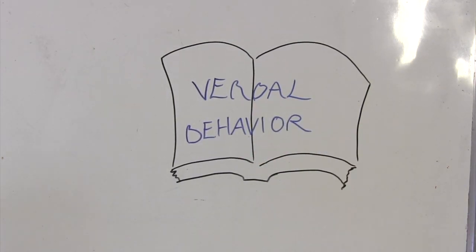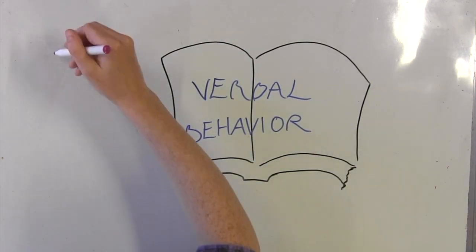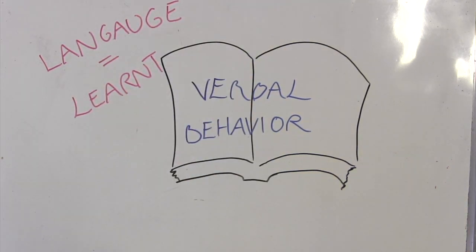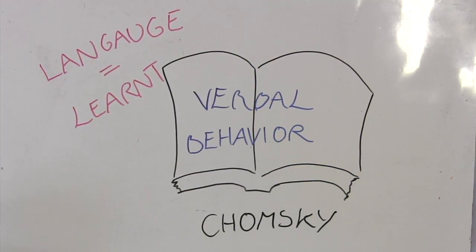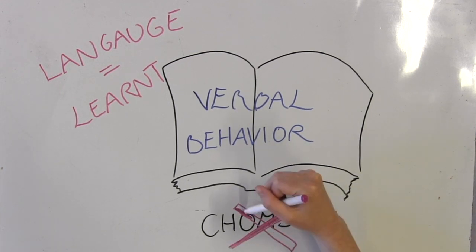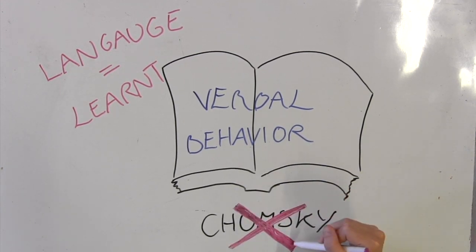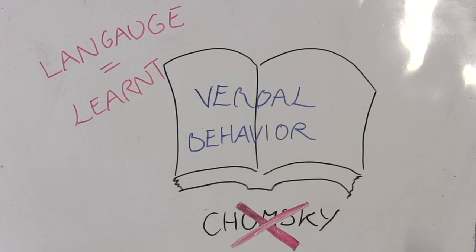He used behavior in the title because children learn how to behave properly in the same way. Skinner says that language is all learned from other people, and it is not something you are born with. And so he disagrees with our first linguist, Chomsky.